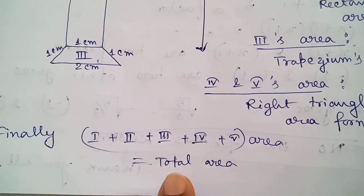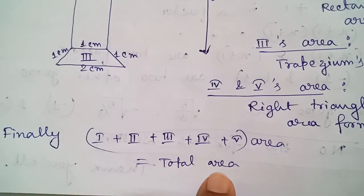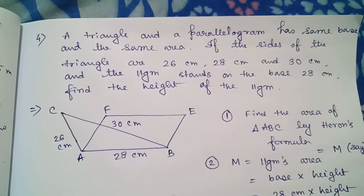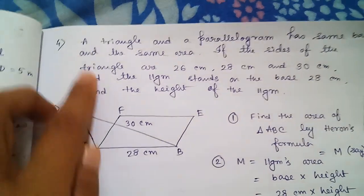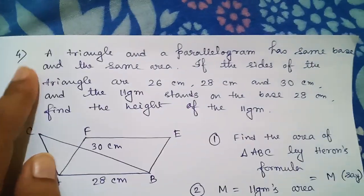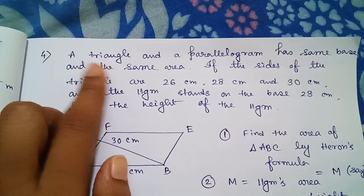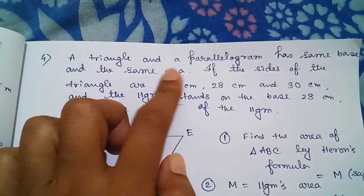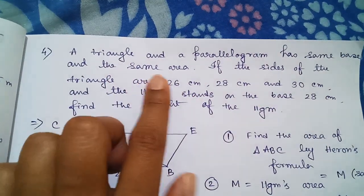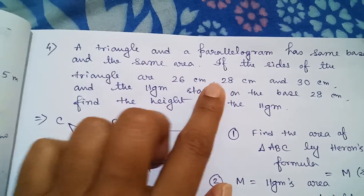Once we have got all five parts' area, we will just add all areas together and get the total area. Moving on to question number four: a triangle and a parallelogram have the same base and the same area.